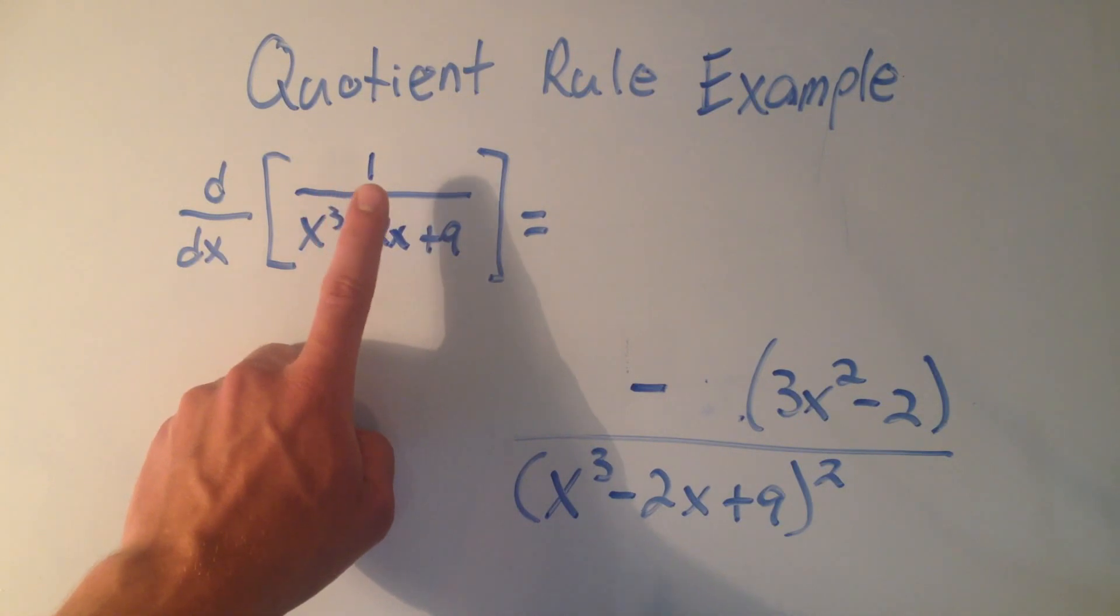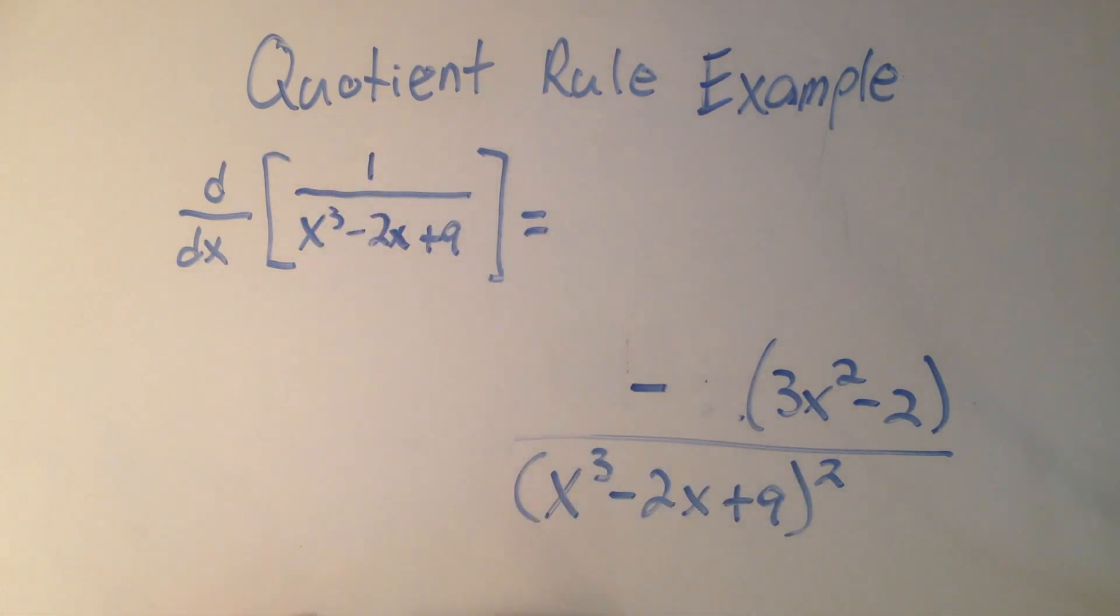So when there's a 1, the quotient rule kind of collapses into the reciprocal rule. But we'll do another quotient rule example that's a little bit harder than this next time.